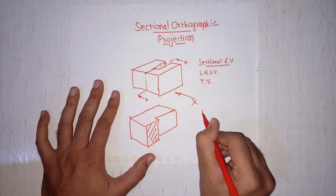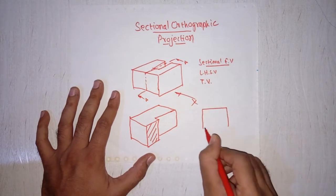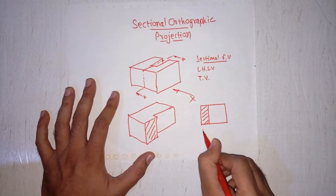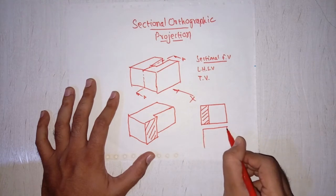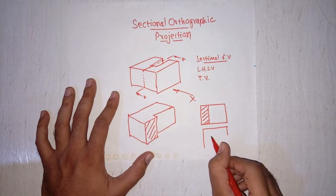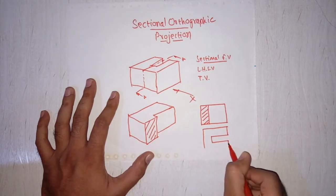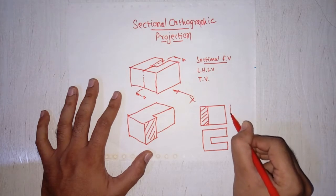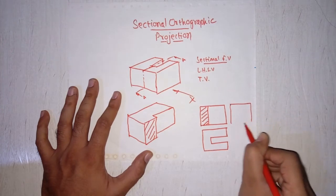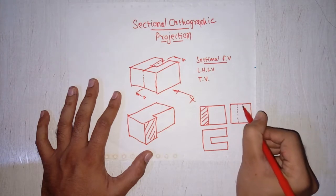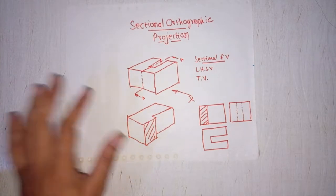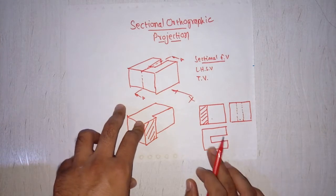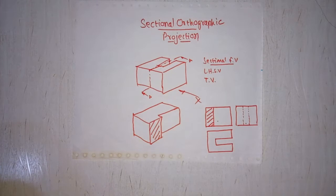By this hatch I am showing that this surface is being cut. I have to imagine this part while drawing the front view, which is called the sectional front view. The front view will appear like this, but the top view and side views are drawn by considering the full object. This is the top view, and the left-hand side view will be like this. So we have the sectional front view, left-hand side view, and top view.